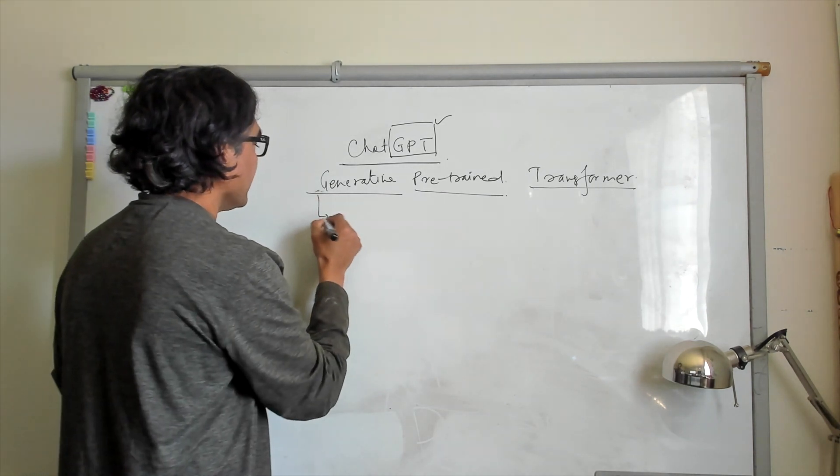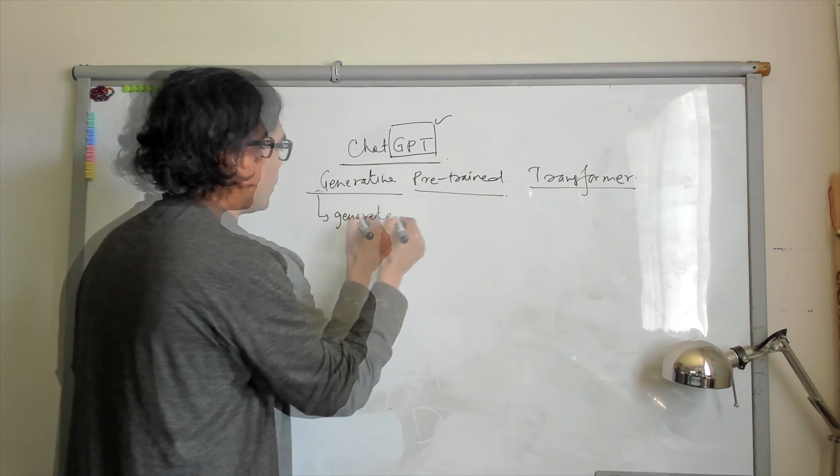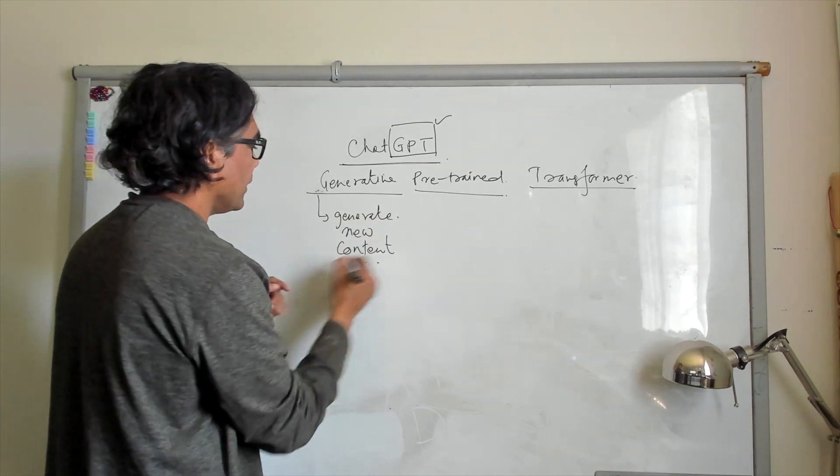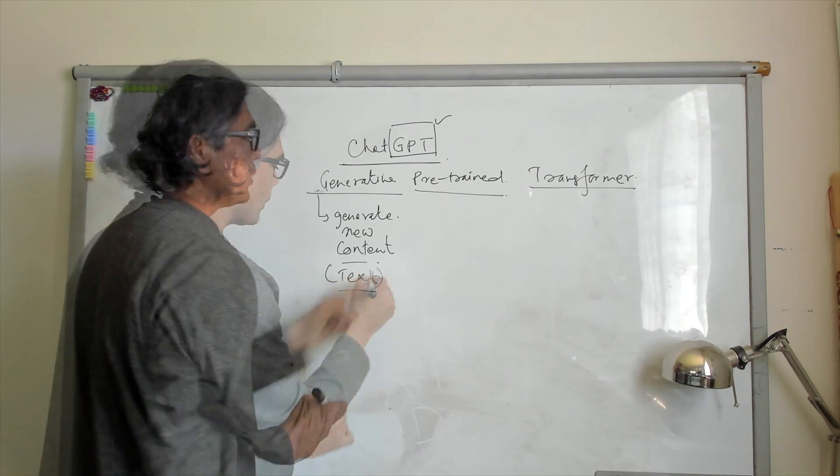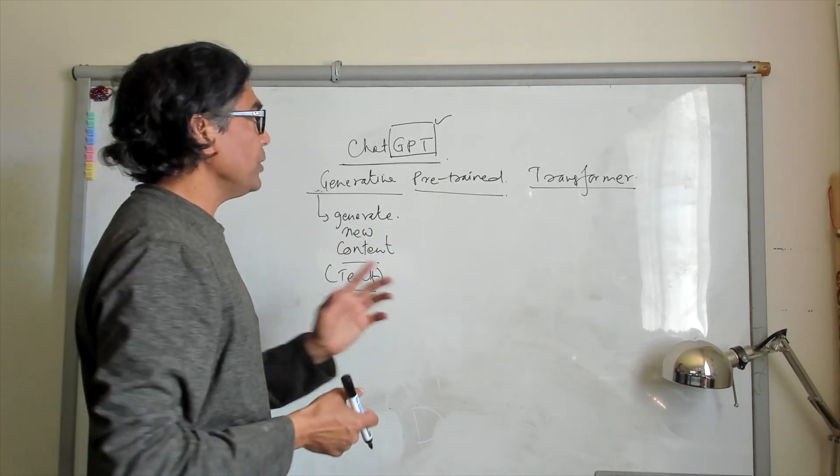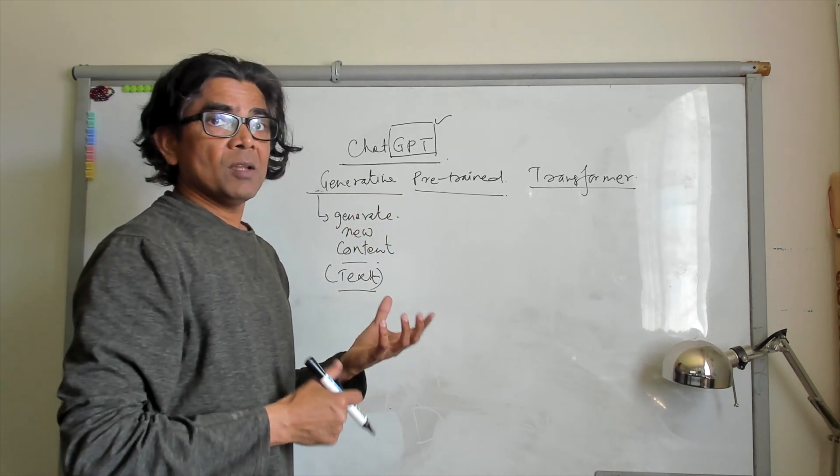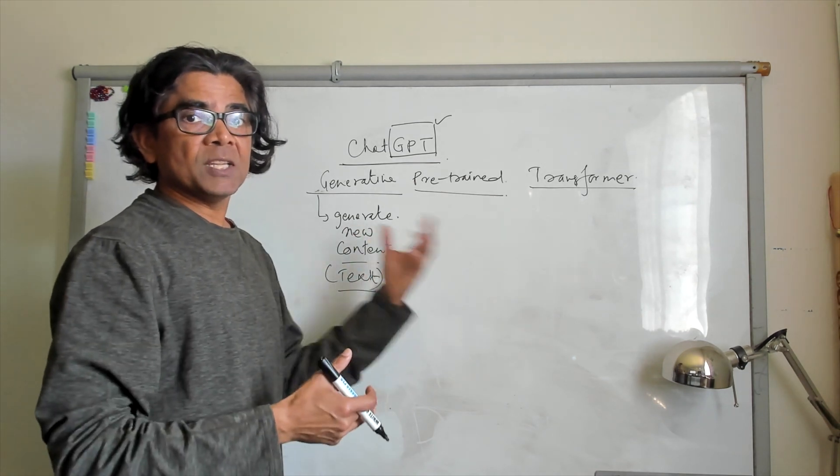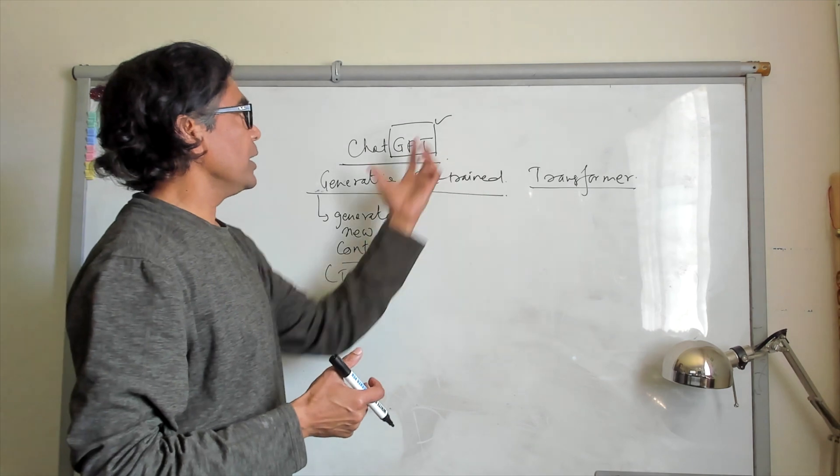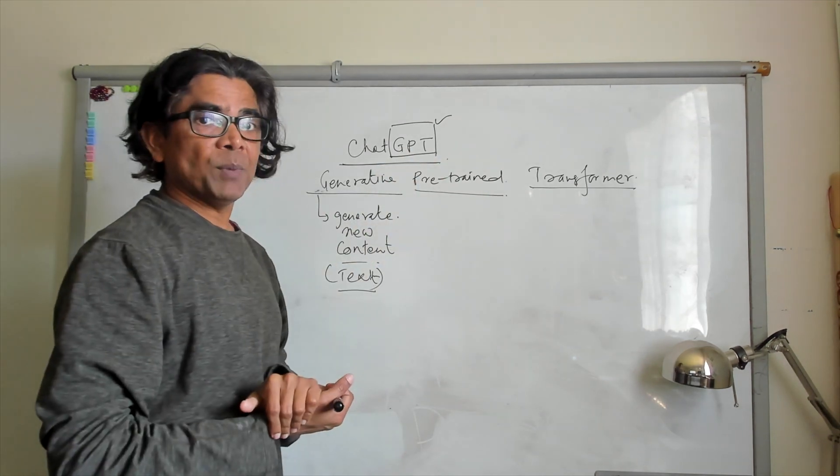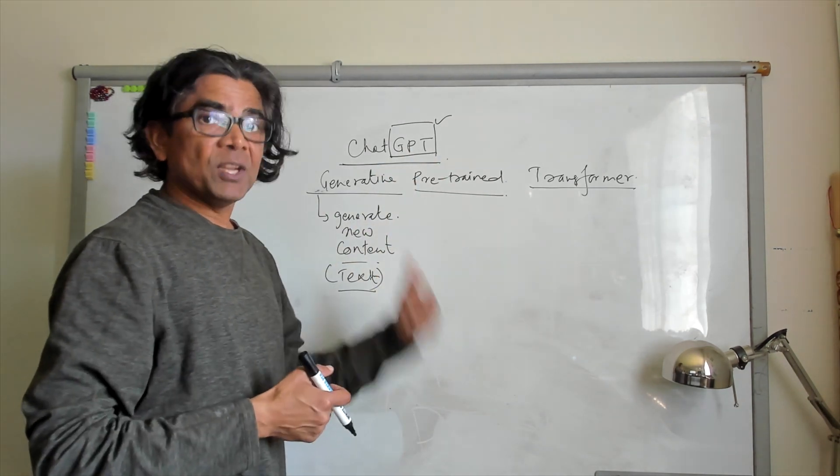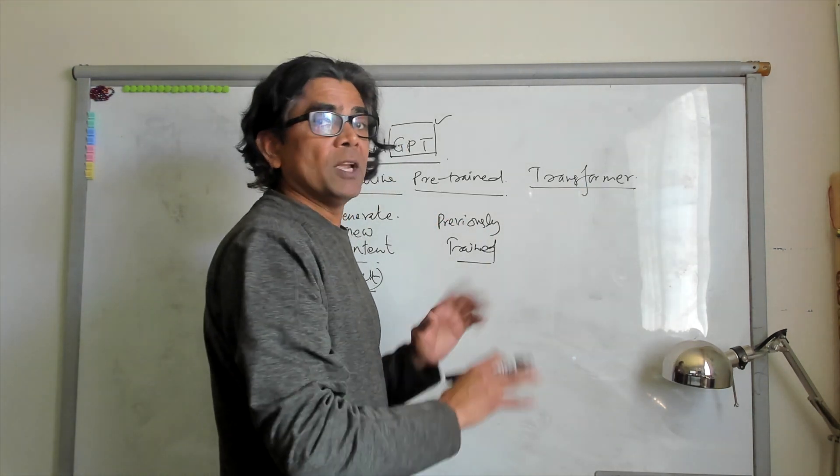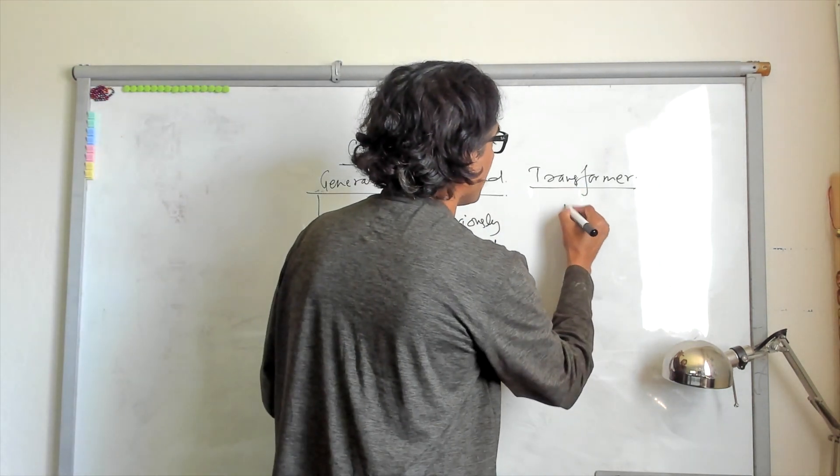Generative basically means generate new content, and in this scenario it's text. Second is Pre-trained. It means the machine learning model is using Pre-trained, meaning the large language model at the core of ChatGPT has already been previously trained. And finally, the Transformers. It is using the Transformers architecture.